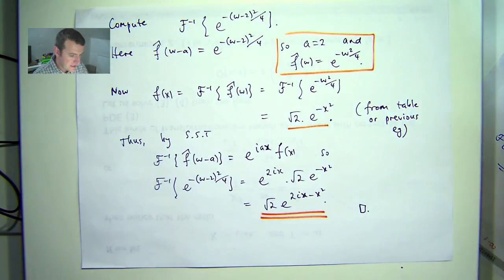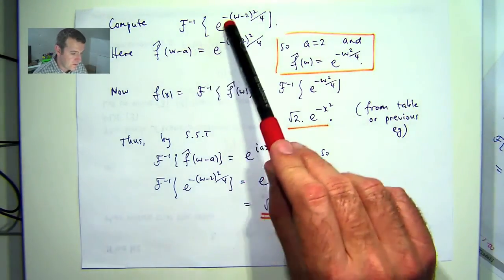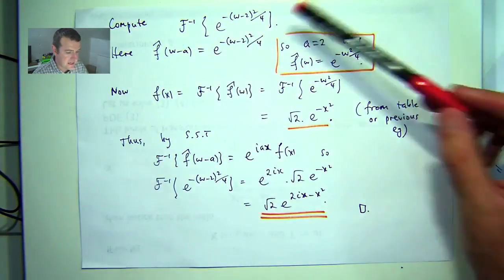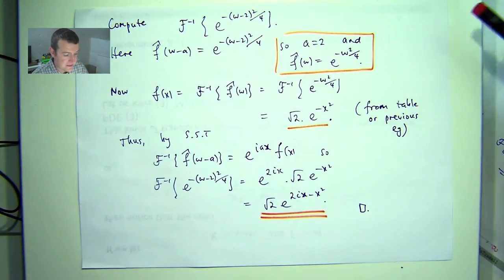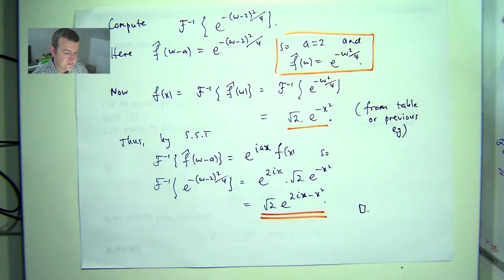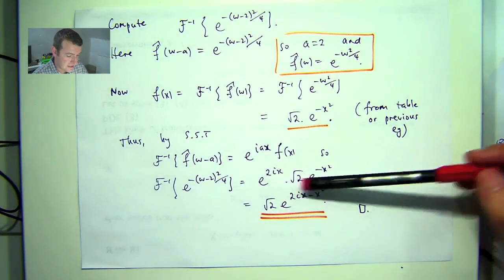Now, you know, it's reasonably algorithmic. You can see that, once you've got this shifted function of w, you identify a, you identify f hat of w, you compute the inverse transform of f hat of w, and then just multiply through by this exponential function.